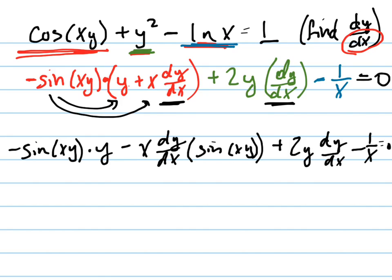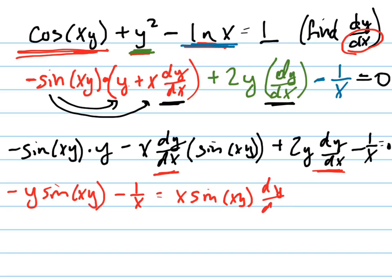And tell me if I'm doing something wrong, because I tend to make silly mistakes, just like everybody does. Those two things I'm trying to get by themselves. So let's move those things to the right and leave everything else on the left. I'm going to write this the right way now. Negative y sine xy minus 1 over x equals x sine xy dy dx. That was this one, moving it over. That's why that became positive. Minus 2y dy dx.